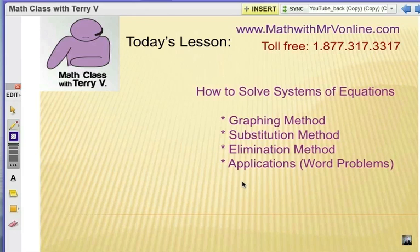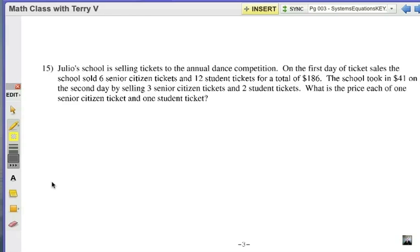I've got two word problems for you to try. Number 15, let's try this. Julio's school is selling tickets to the annual dance competition. On the first day of ticket sales, the school sold six senior citizen tickets and 12 student tickets for a total of $186. The school took in $41 on the second day by selling three senior citizen tickets and two student tickets. What's the price of each one senior citizen ticket and one student ticket?